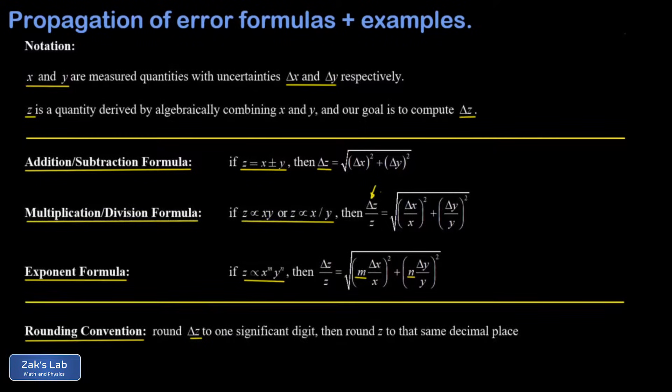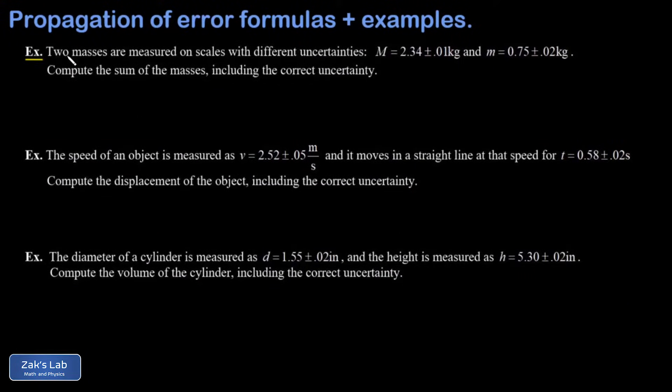In our first example, we're told that two masses are measured on scales that have different uncertainties. Our first mass ends up being 2.34 plus or minus 0.01 kilograms. The second is 0.75 plus or minus 0.02 kilograms. And we want the sum of the masses and the correct uncertainty on that sum.